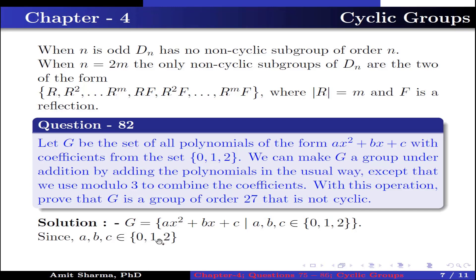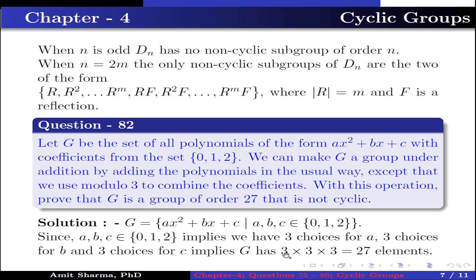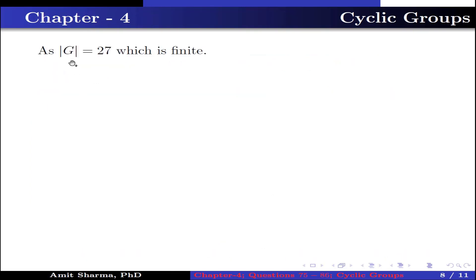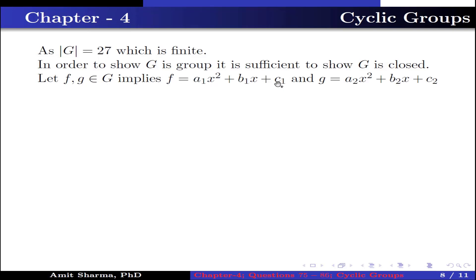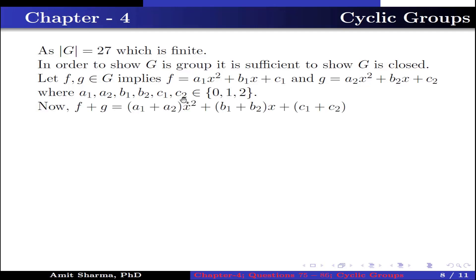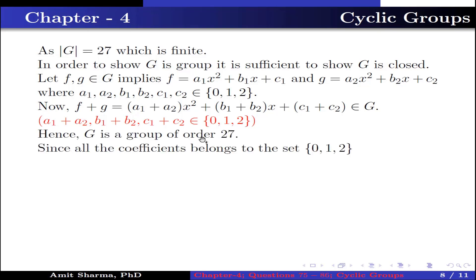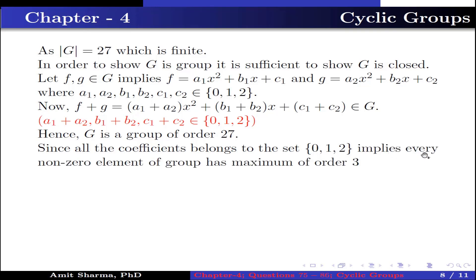Since a, b, c each belong to {0, 1, 2}, we have 3 choices for each coefficient, giving G exactly 3 × 3 × 3 = 27 elements. To show G is a group, it suffices to show closure: for f = a₁x² + b₁x + c₁ and g = a₂x² + b₂x + c₂, f + g = (a₁+a₂)x² + (b₁+b₂)x + (c₁+c₂), and the coefficients remain in {0, 1, 2} under modulo 3. Hence G is a group of order 27. Since all coefficients are in {0, 1, 2}, every non-zero element has order at most 3, so G is not cyclic.